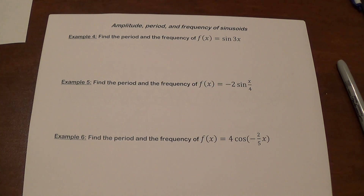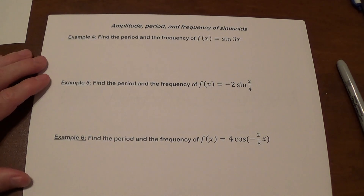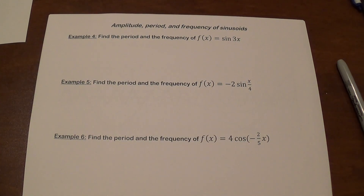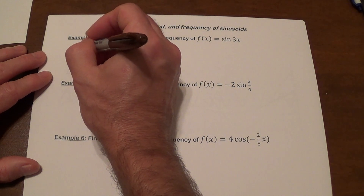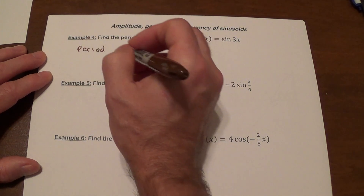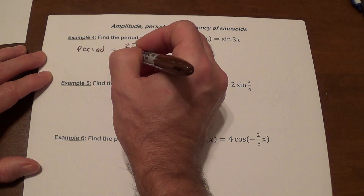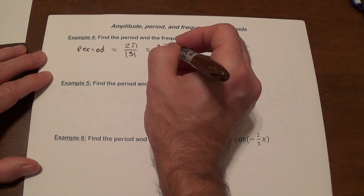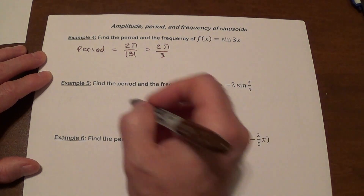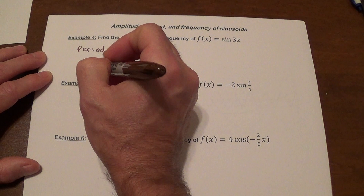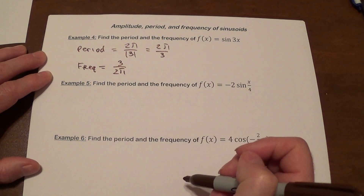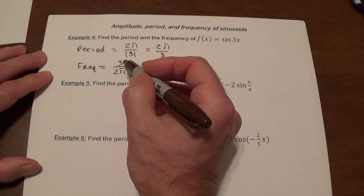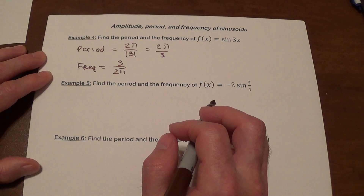Find the period and frequency of sine of 3x. The value of b is 3, so the period is 2π divided by the absolute value of 3, which is 2π over 3. The frequency is the reciprocal: 3 over 2π. That means the graph completes 3 full revolutions on an interval of 2π.